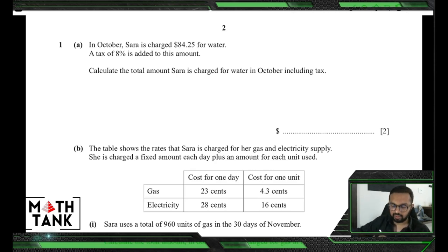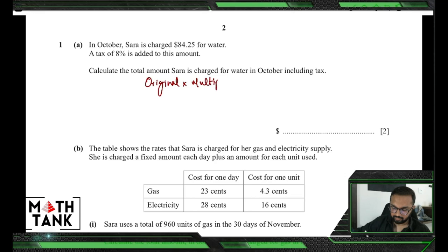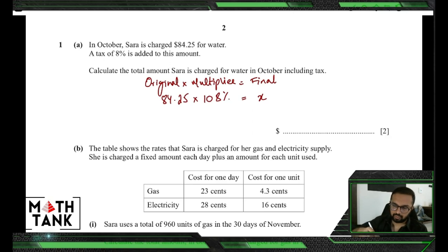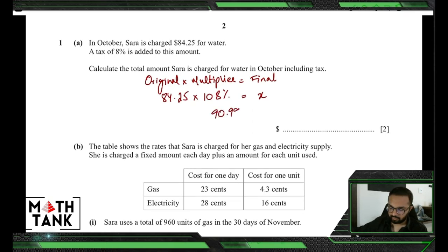So I'm asking you to basically increase this amount by eight percent. This is the original amount, so I'm going to say that the original multiplied by the multiplier is the final. The original is 84.25, the multiplier is 108 percent, and the final is x. So 84.25 into 108 percent equals x, which gives 90.99.